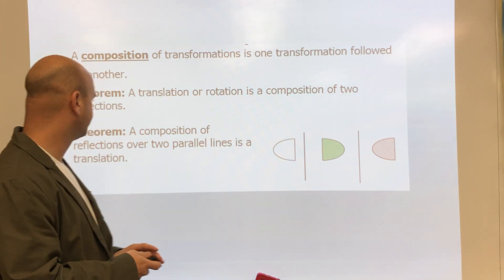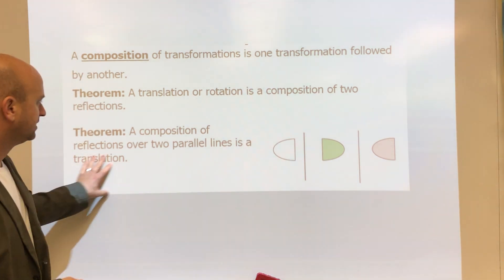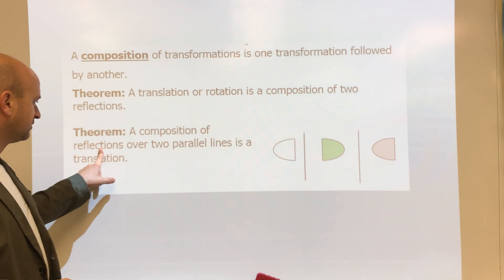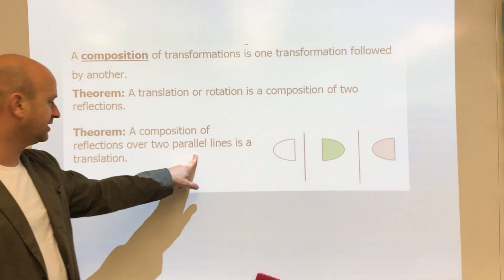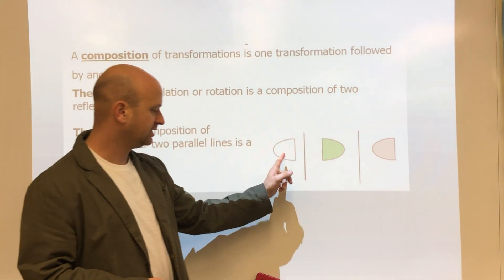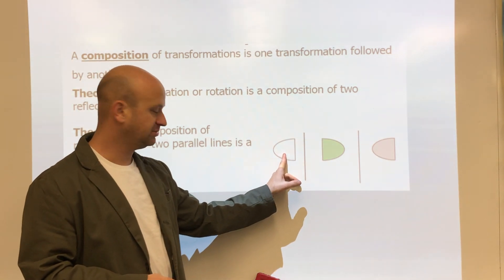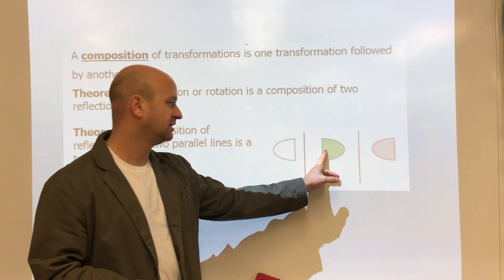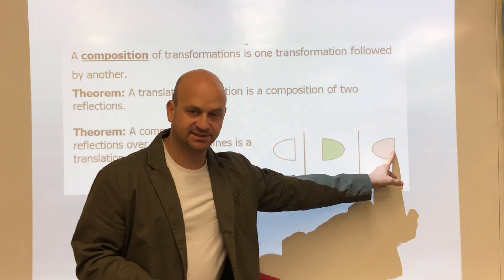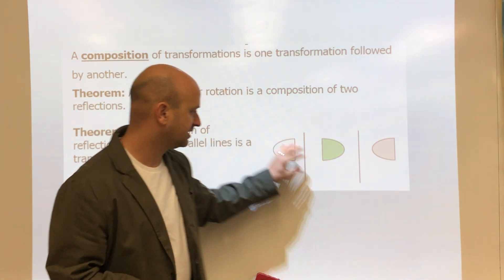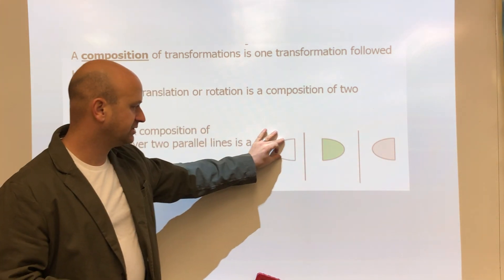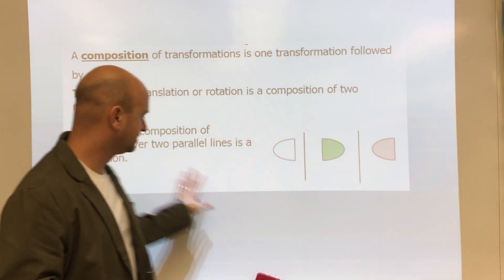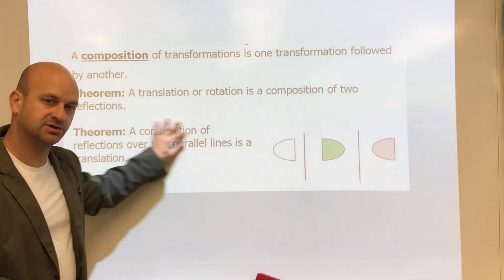We'll see that in a second. If you reflect over two parallel lines — take this original shape, reflect it over this line, and reflect it again over that line — this is going to actually be a translation. That's something you're going to want to know.